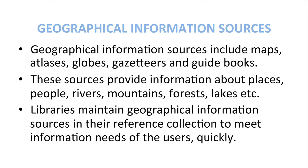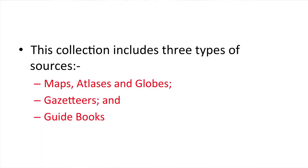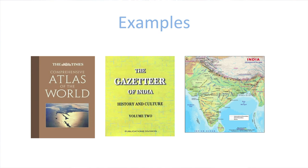Geographical information sources include maps, atlases, globes, gazetteers, and guidebooks. These sources provide information about places, people, rivers, mountains, forests, lakes, etc. Libraries maintain geographical information sources in their reference collection to meet the information needs of users quickly. This type of collection includes three types of sources: maps, atlases and globes, and gazetteers and guidebooks.